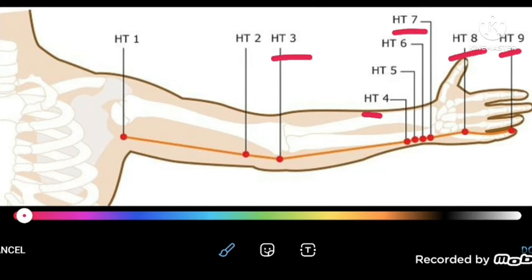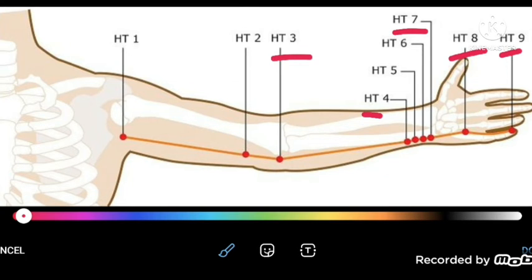In this way we have five element points in the heart meridian.